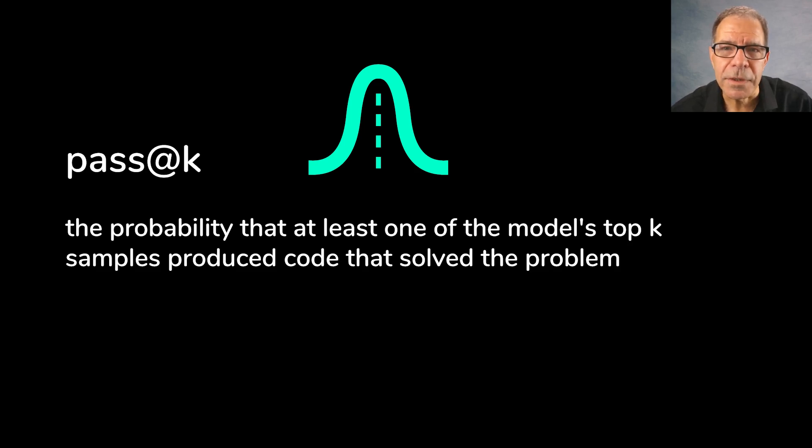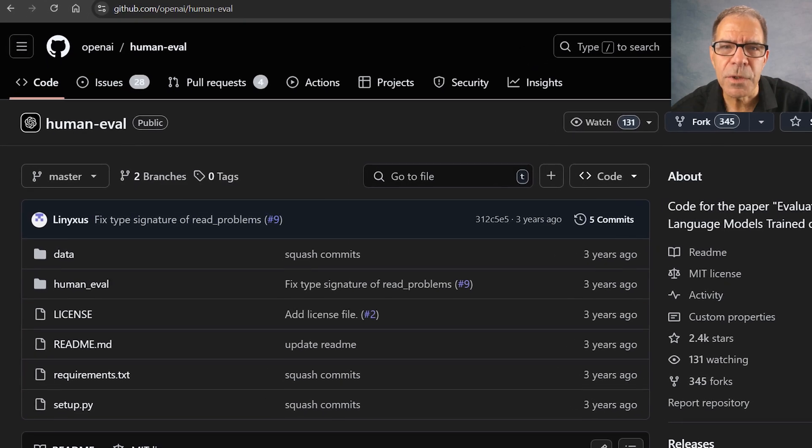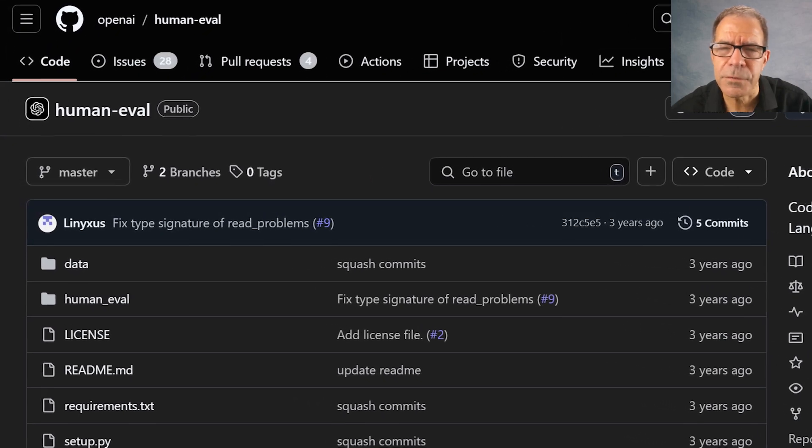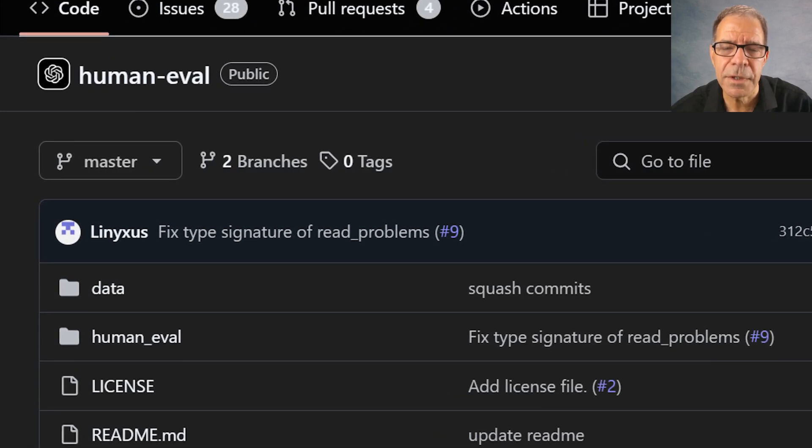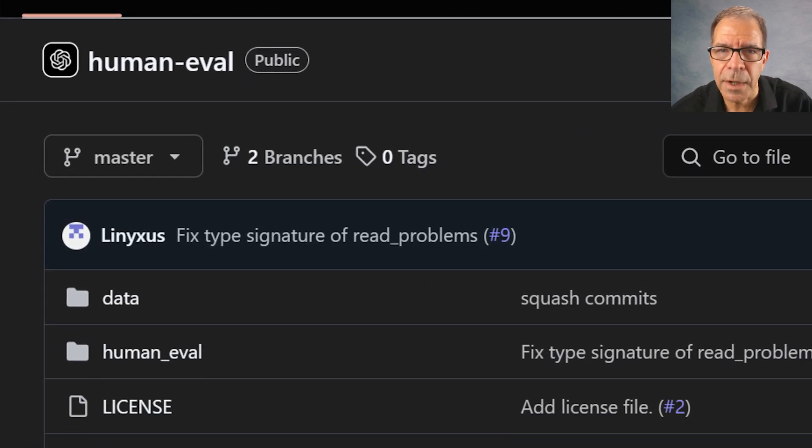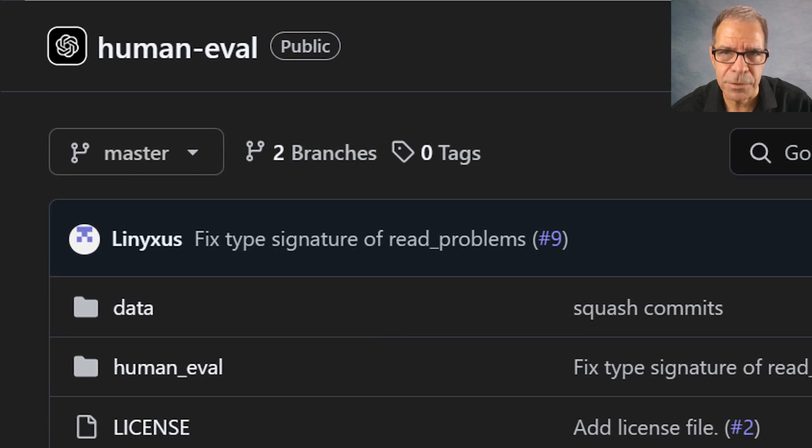It's worth noting that human eval is one of the most cited benchmarks for rating performance of language models that write computer code. It's a difficult standard used by OpenAI, DeepMind, and others.